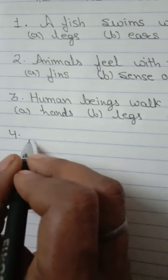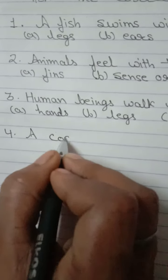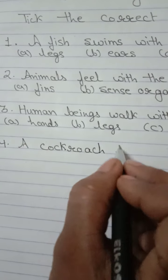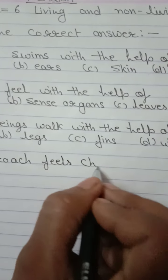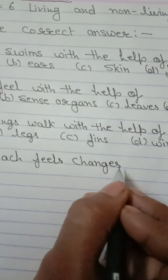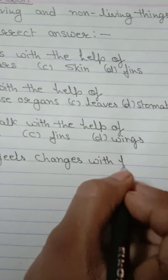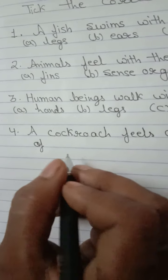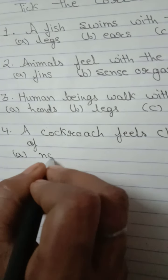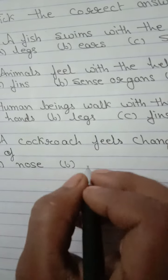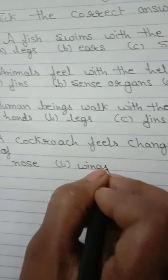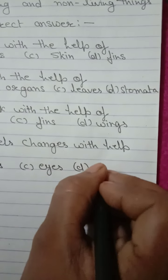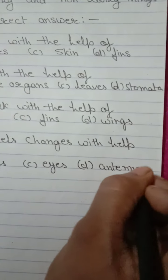Fourth, a cockroach feels changes with the help of. First is nose, second is wings, third, eyes, and D, antennae.